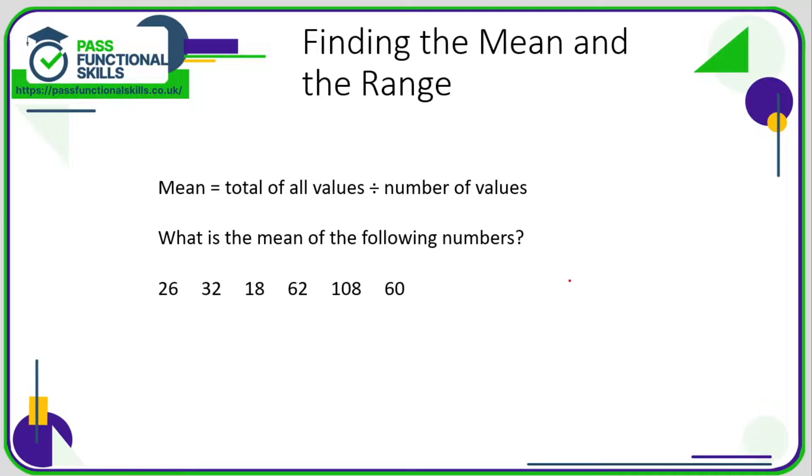Let's take a look at finding the mean and the range. The mean is a way to calculate the average - it's probably the most common way that we work out averages. The mean is the total of all of the values added together divided by the number of values you have.